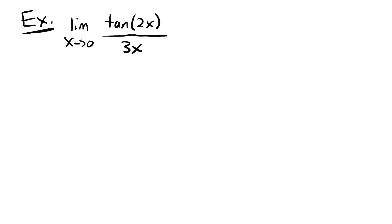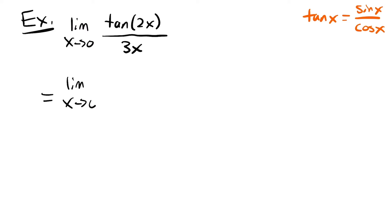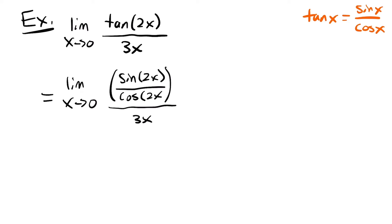Next, we're going to look at the limit as x approaches 0 of tangent of 2x divided by 3x. This one is a little bit different — we haven't seen a limit approach 0 for a tangent function yet. So we're going to have to use some knowledge about trig functions. Remember that tangent x is equal to sine x over cosine x, and it's going to be the same for these two as well. So we can say that this is equal to the limit as x approaches 0 of sine of 2x divided by cosine of 2x, all divided by 3x.